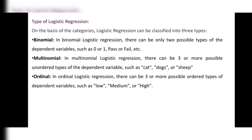There are basically three types of logistic regression: binomial, multinomial, and ordinal. In binomial logistic regression, there can be only two possible types of the dependent variable, such as 0 or 1, pass or fail, or true or false. Binomial gives only two values — either true or false.